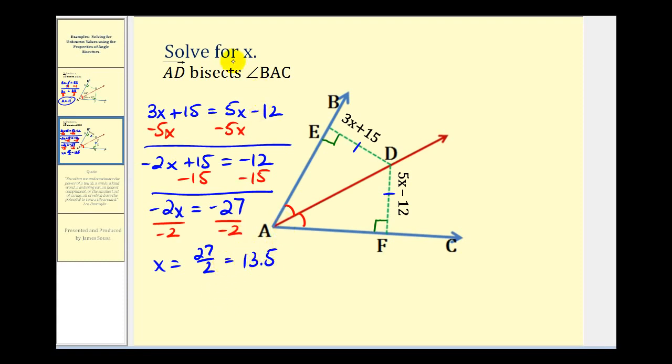So the question here asks us to solve for x, so we know x is equal to 13.5. But you may also be asked to determine the length of each segment. We know they're the same length, so we should be able to just sub in x equals 13.5 to either expression to determine the actual length of these segments.